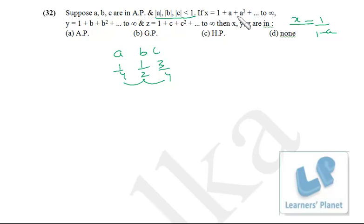Now x is equal to 1 upon 1-a. So precisely x is equal to 1 upon 1 minus 1 by 4. So that's 3 by 4. So x is equal to 4 by 3 we have got. Similarly y is equal to 1 upon 1 minus 1 by 2. So that is 1 by 2. So y is equal to 2.